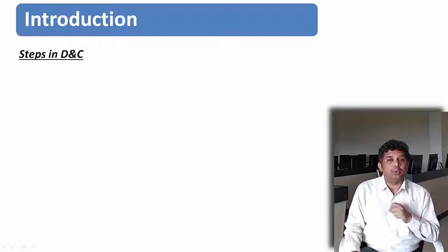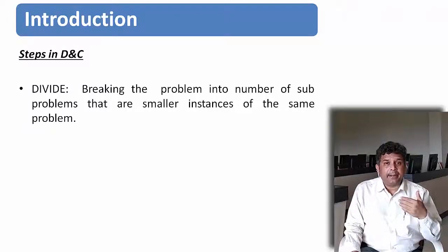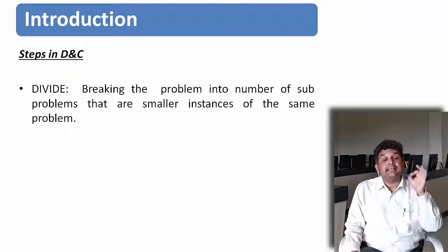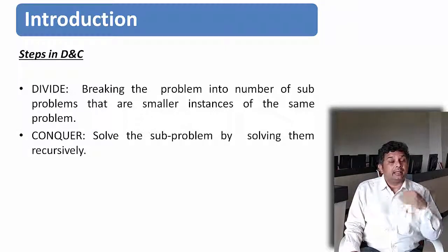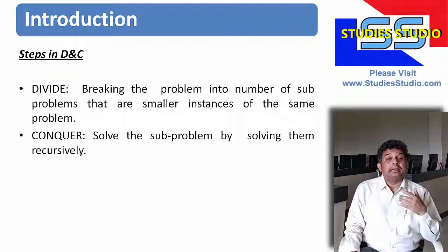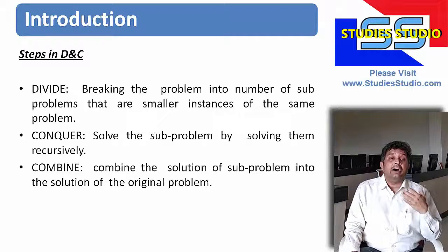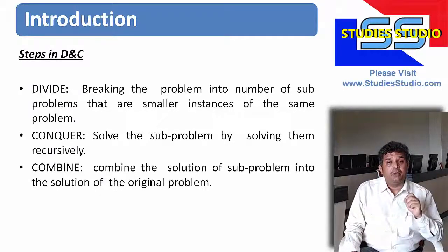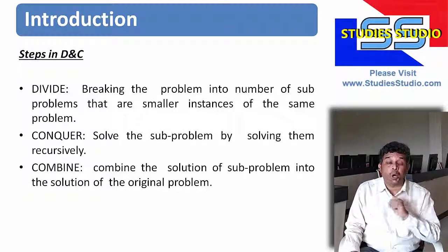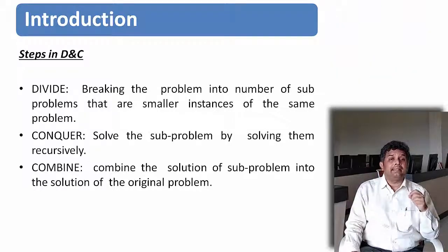Let us see what are the basic steps we apply for divide and conquer. The first step is divide — breaking the problem into sub-problems that are smaller instances of the same problem. The next step is conquer — here we solve the sub-problems recursively. The third step is combine — after finding the smallest problem, we combine all the sub-problems to find the solution of the original problem.